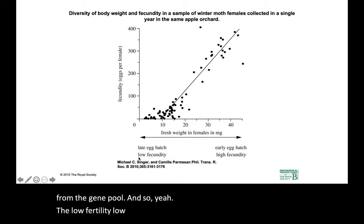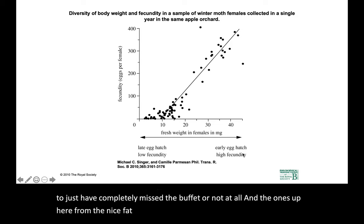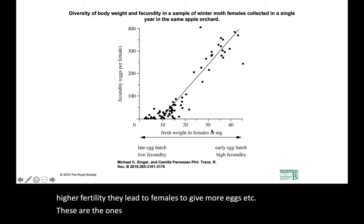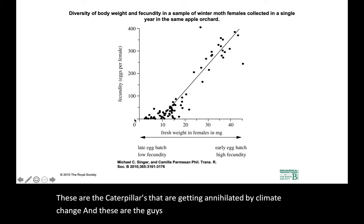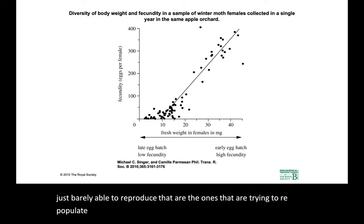The low-fecundity eggs will tend to hatch late and just have completely missed the buffet or not hatch at all. The ones from the nice fat females will try to hatch early and will have higher fertility — they'll lead to females that give more eggs. These are the caterpillars that are getting annihilated by climate change. And the sort of wimpy, scrawny ones that are just barely able to reproduce are the ones trying to repopulate the butterfly population, and it is not going well.